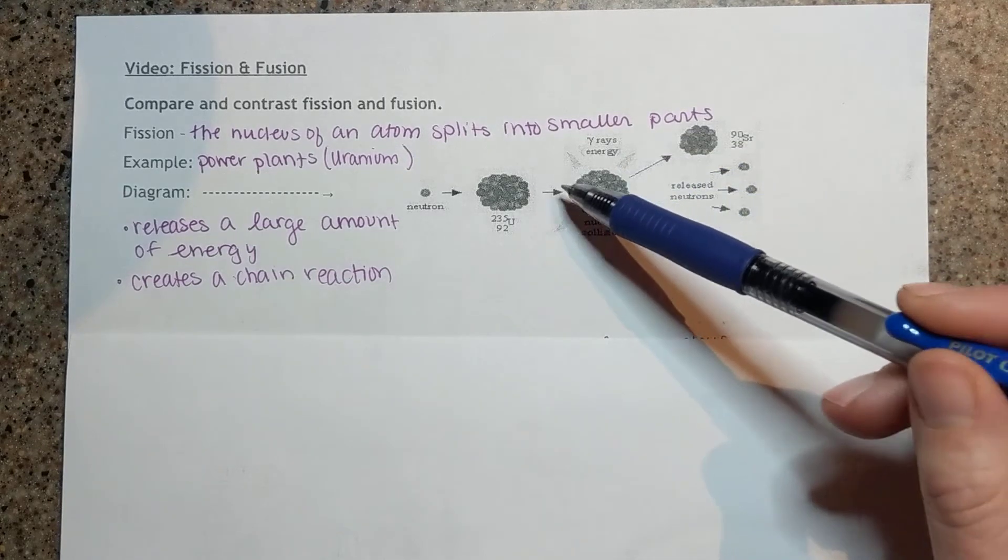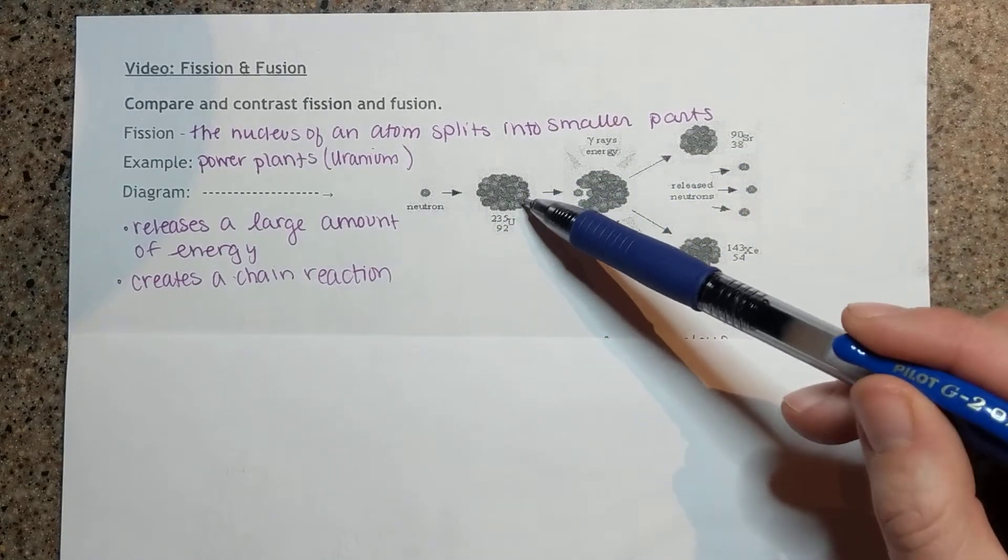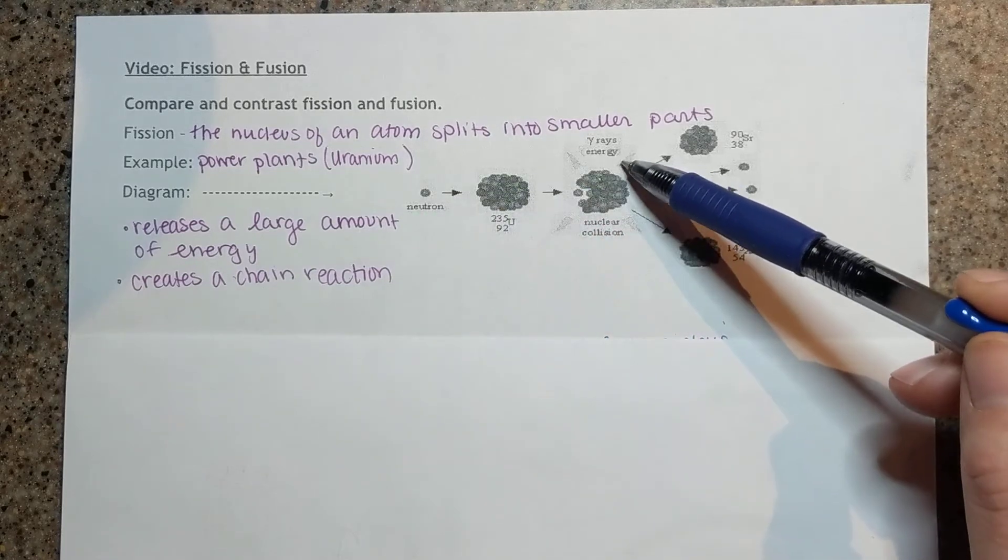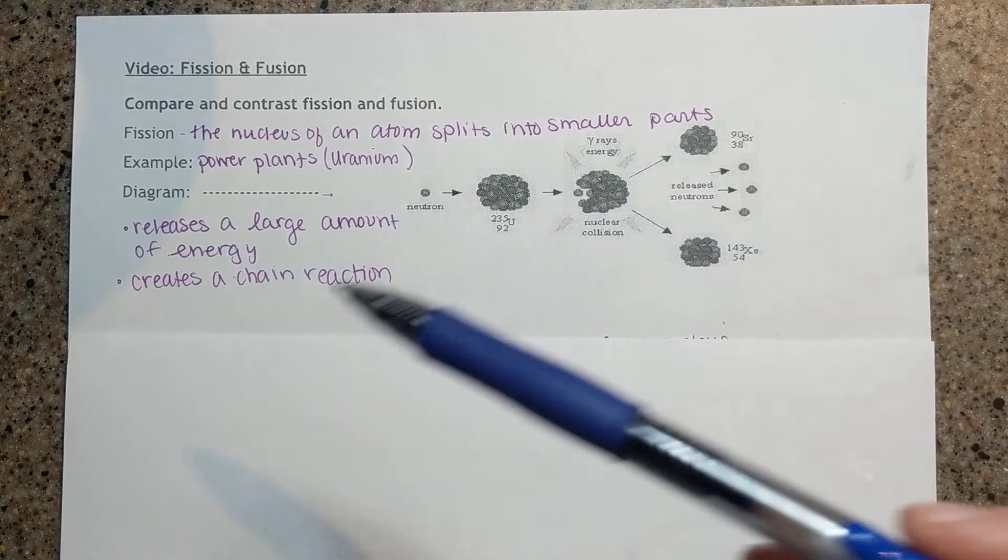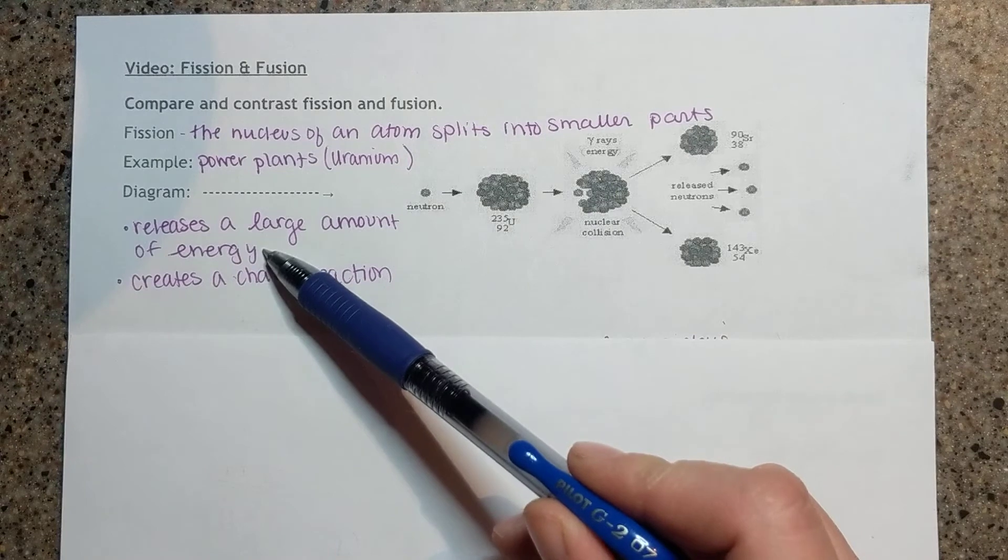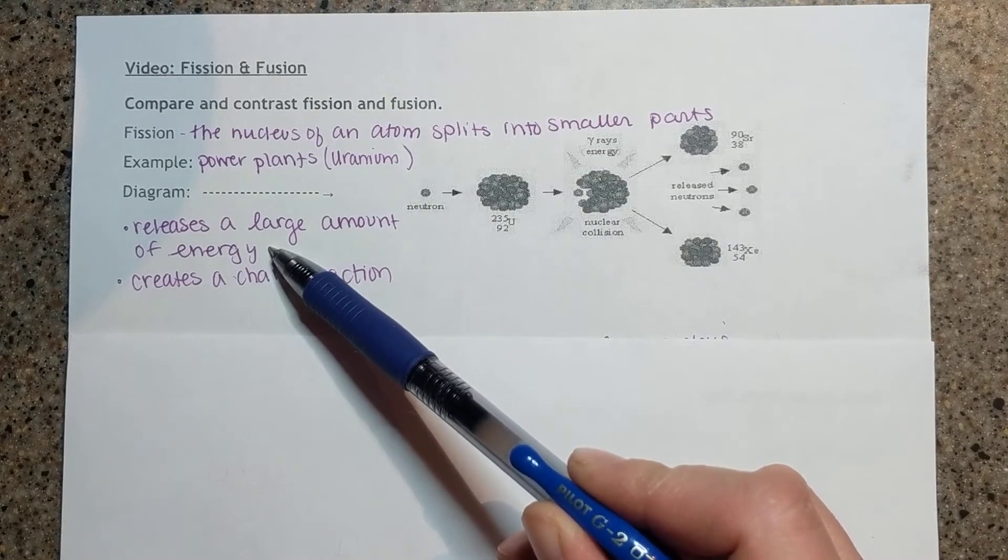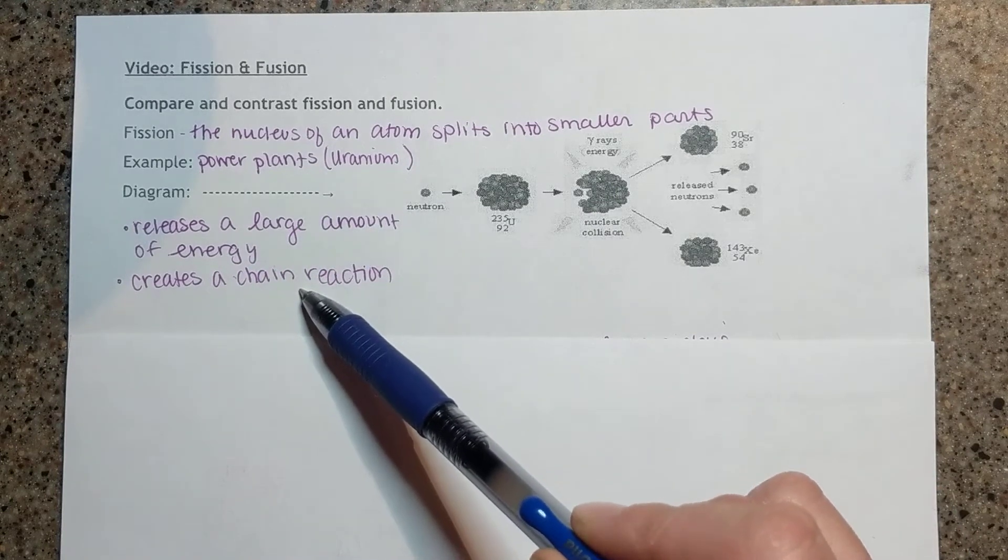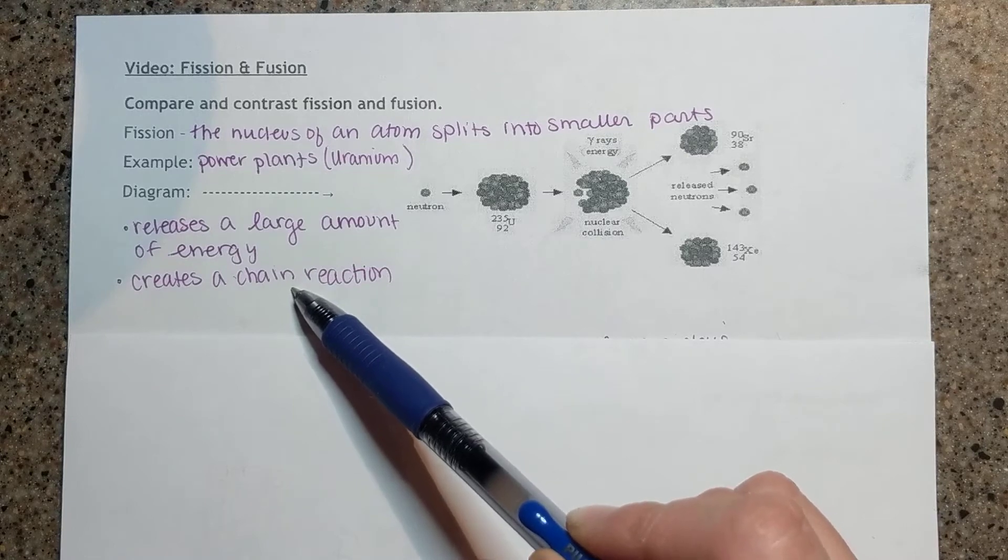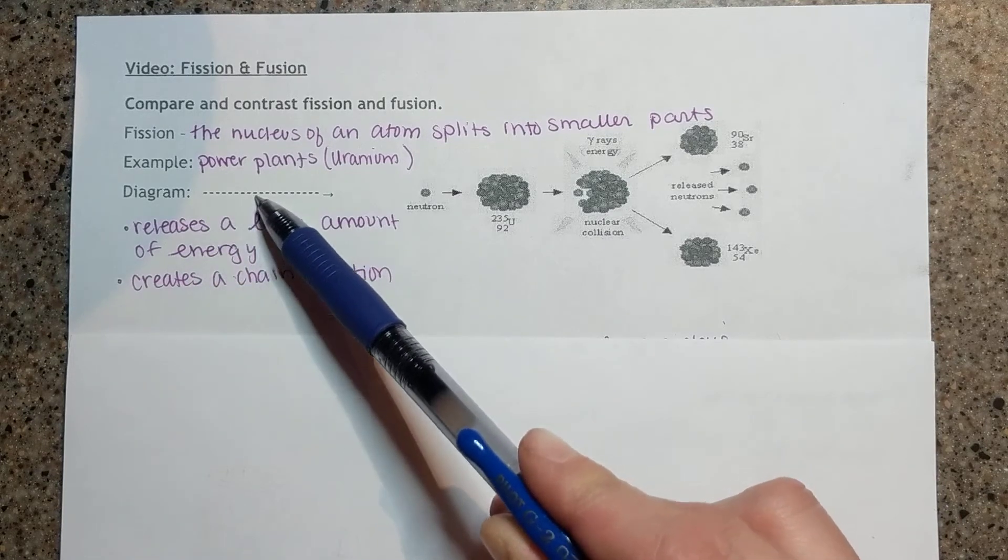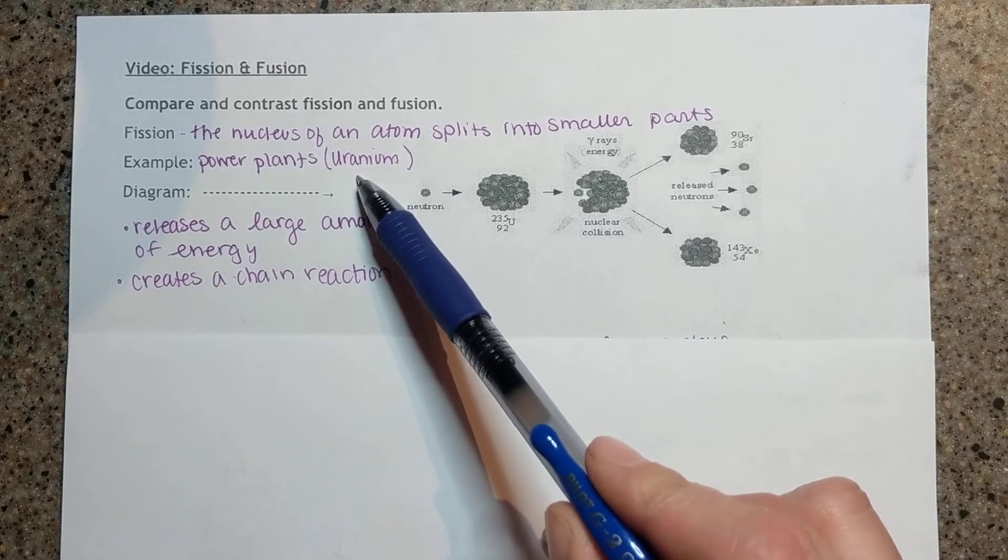We notice here that when we hit our uranium-235 with our neutron that we release energy. There's a large amount of energy released during fission. And we note that it created a chain reaction. Examples of where this happens are in power plants where they use uranium.